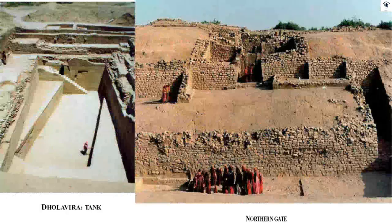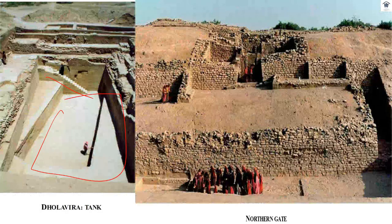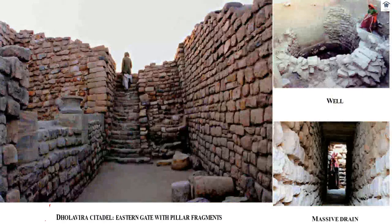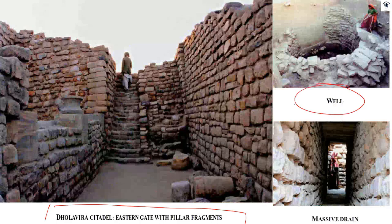You can see that in Lothal — a wonderful thing. Then we have a tank, a beautiful tank where water was collected and you could come down and clean. There's a northern gate being shown, and some people still tend to live close to these places. This is the Dholavira Citadel's eastern gate with a pile of fragments, a well, and a massive drain shown in Dholavira as well. You can see there's a commonality in urbanization.